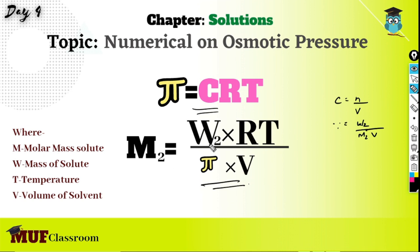M₂ is the molar mass of solute, W₂ is the mass of solute, R is the gas constant (8.314), T is the given temperature, π is the osmotic pressure, and V is the volume of solvent.